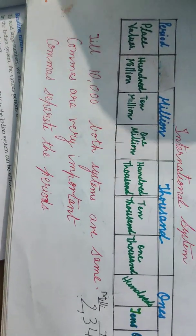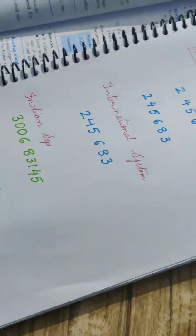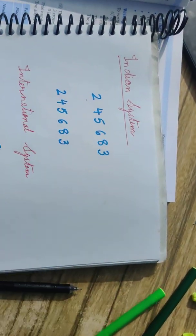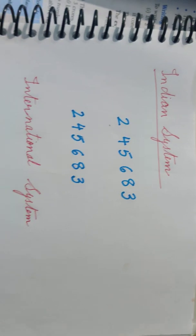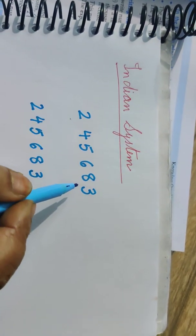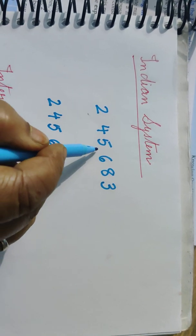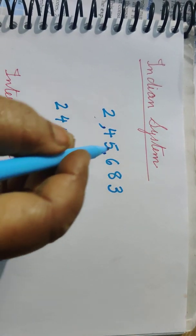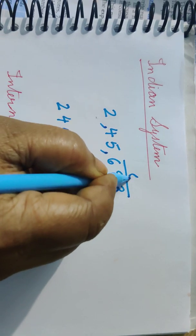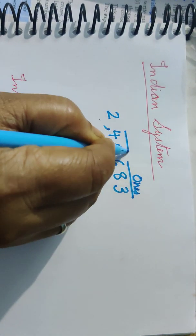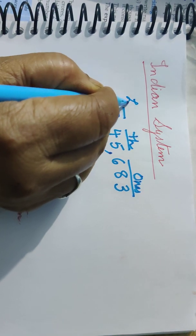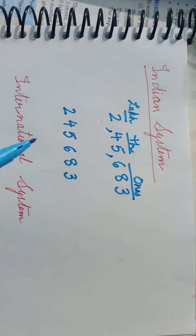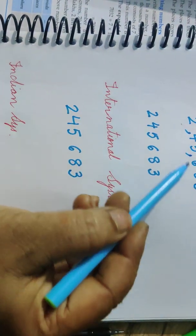Let us take one more example. Consider the number 245683. In the Indian system, we place commas as follows: ones period gets three places — 683. Then the thousands period has two places — 45. Two digits remain for the lakh period — 2. So we read: two lakh, forty-five thousand, six hundred eighty-three.